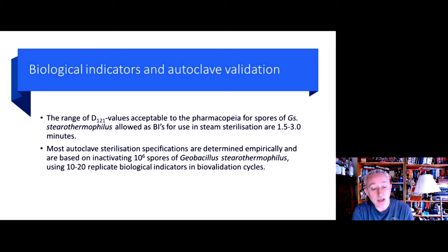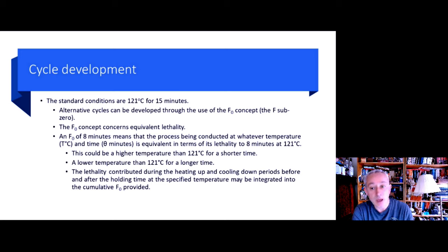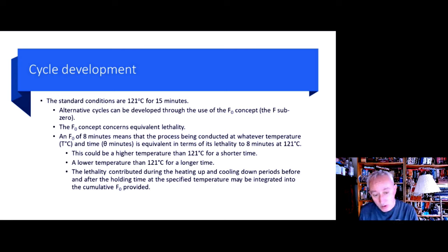We also have another concept that we need to consider for when we're doing autoclave cycle development, and this is the F concept. In particular, something called F sub zero, which is normally written with a capital F and a lowercase zero. This concerns equivalent lethality. The origin of this term dates back to the food canning industry in the 1960s. F sub zero is always linked to 121 degrees Celsius. It allows us to consider at what temperature, other than 121 degrees, and for how long, would deliver the same level of lethality, achieving this 1 million cell or spore reduction.